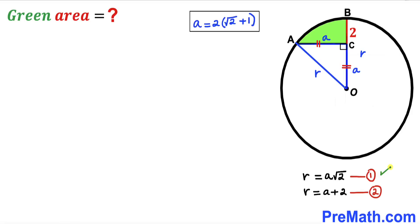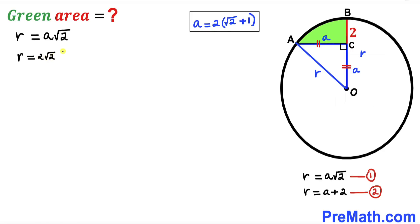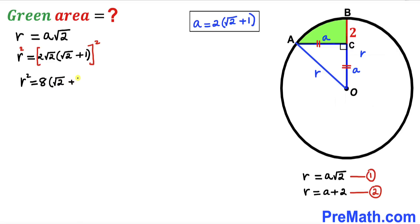Now focusing on Equation 1: r = a√2, with a = 2(√2 + 1), we substitute to get r = 2√2(√2 + 1). Squaring both sides, r² equals the square of the right-hand side. Since (2√2)² = 8, we get r² = 8(√2 + 1)².